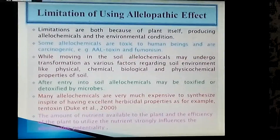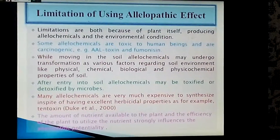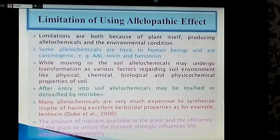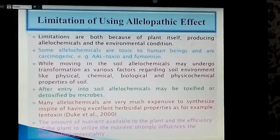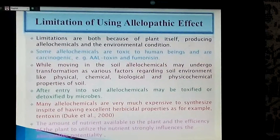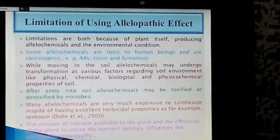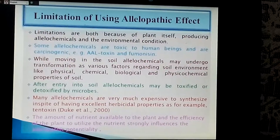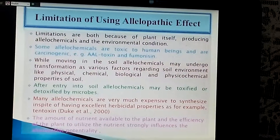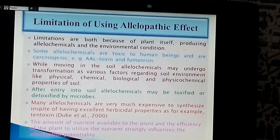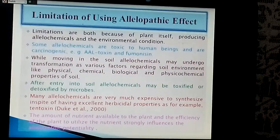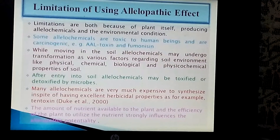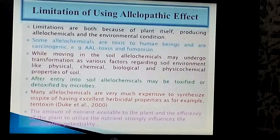Limitations of using allelopathic effects: limitations arise from both the plant itself producing allelochemicals and environmental conditions. Some allelochemicals are toxic to human beings and are carcinogenic. While moving through the soil, allelochemicals may undergo transformation due to physical, chemical, biological, and physico-chemical properties of the soil. After entering the soil, allelochemicals may be detoxified by microbes. Many allelochemicals are expensive to synthesize despite excellent herbicidal properties. The amount of nutrients available to the plant and the efficiency of the plant to utilize nutrients strongly influences allelopathic potentiality.